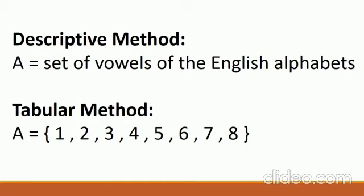Number 1: Descriptive Method — in this method we define a set in proper words. For example, if I want to write vowels of the English alphabet, I will write: 'Set A is the set of vowels of the English alphabet.' There is another method called the Tabular Method. In the tabular method, if you want to write a set of natural numbers less than nine, I write: Set A = {1, 2, 3, 4, 5, 6, 7, 8}. These numbers are less than nine. This is called the tabular method.